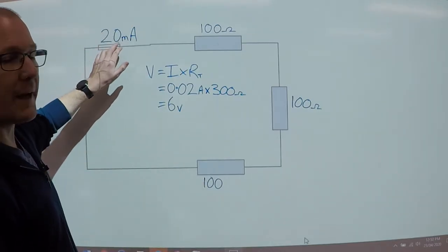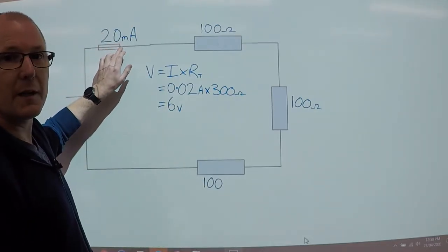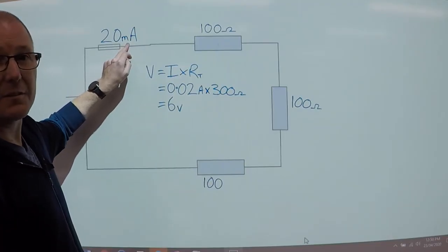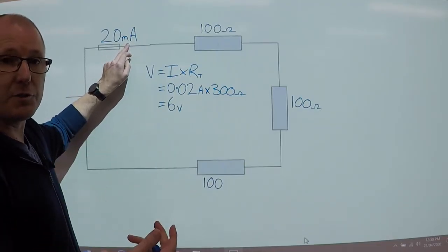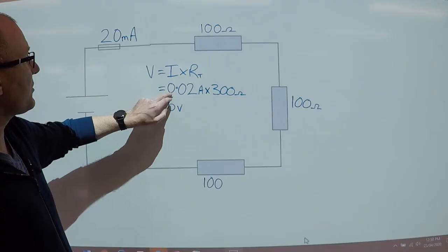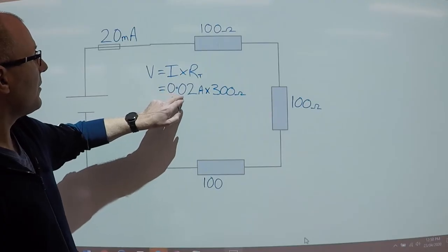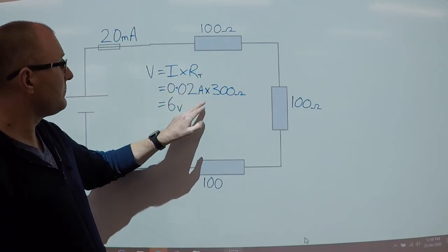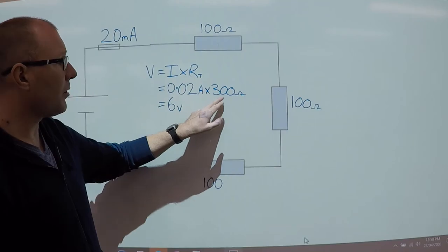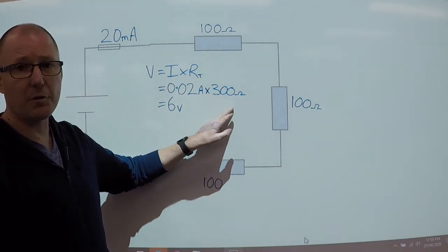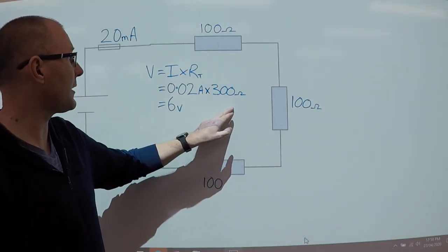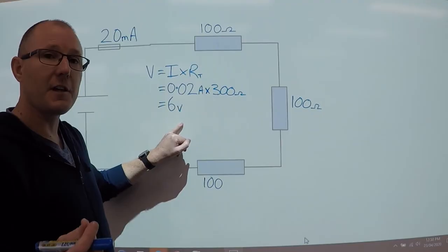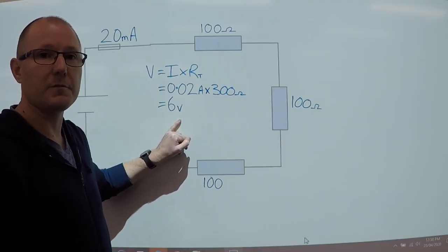So if we had 20 milliamps, we have to bring that down to its base unit. So that gives us 0.02 amps, multiplied by the total resistance which in this case is 300. And that gives us a value of 6 volts.